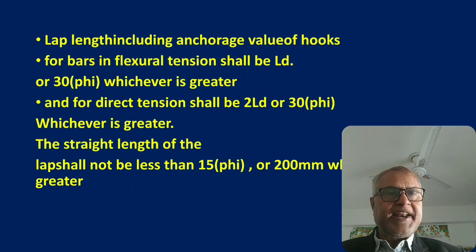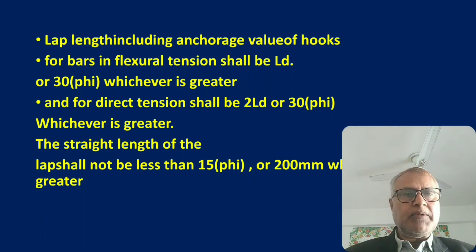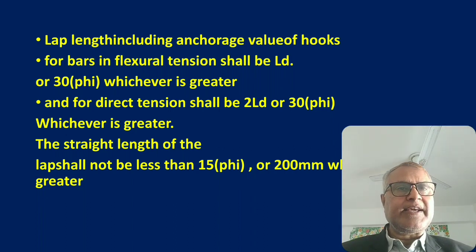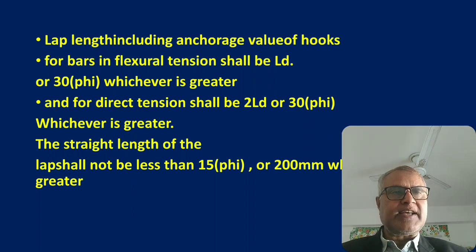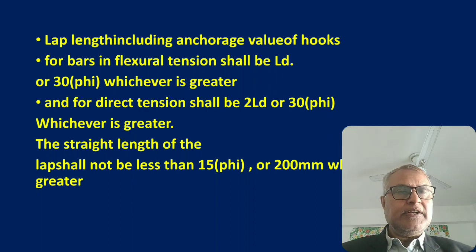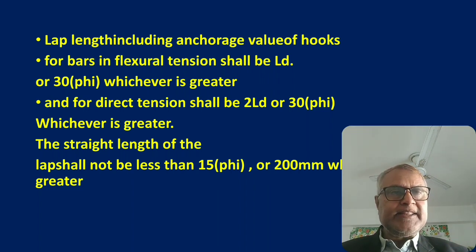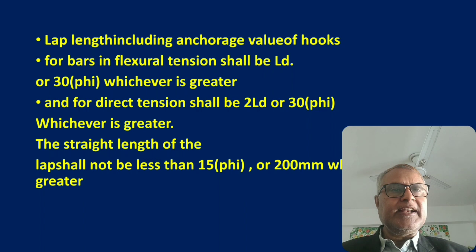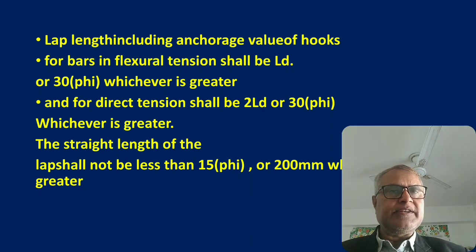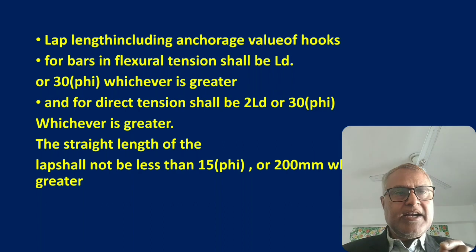If the bars are in direct tension — note that a slab is always considered in tension while a column is in compression — then the lap length distances should always be 2LD or 30φ (30 times the diameter of the bar), whichever is greater. Calculate both 2×LD and 30×diameter, multiply, and take the greater value if the bars are in direct tension.